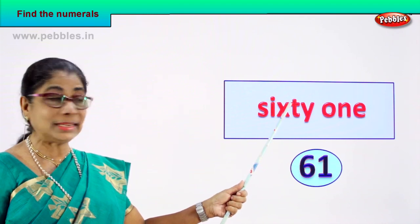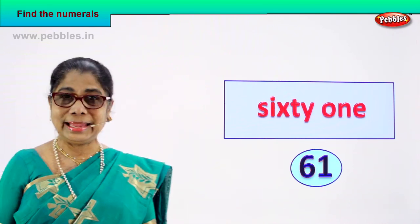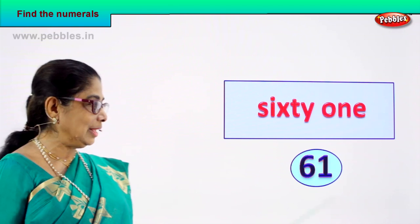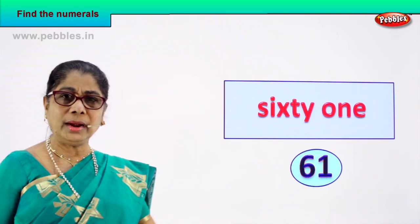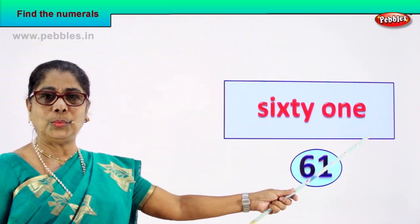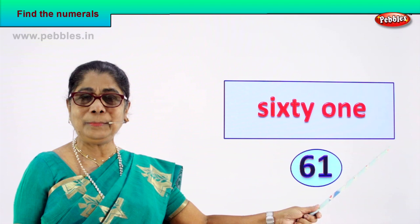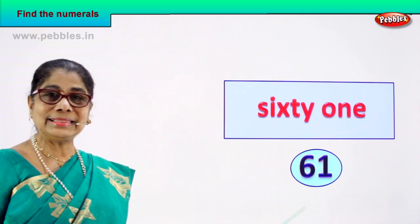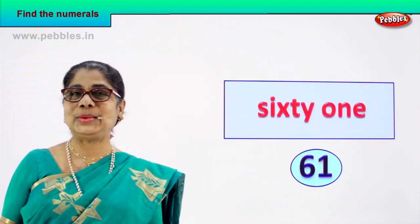Good. How do you spell sixty-one? S-I-X-T-Y, sixty, O-N-E, one. So this is the number name and you form the numeral 6 and 1 — 61. Shall we take another number name?